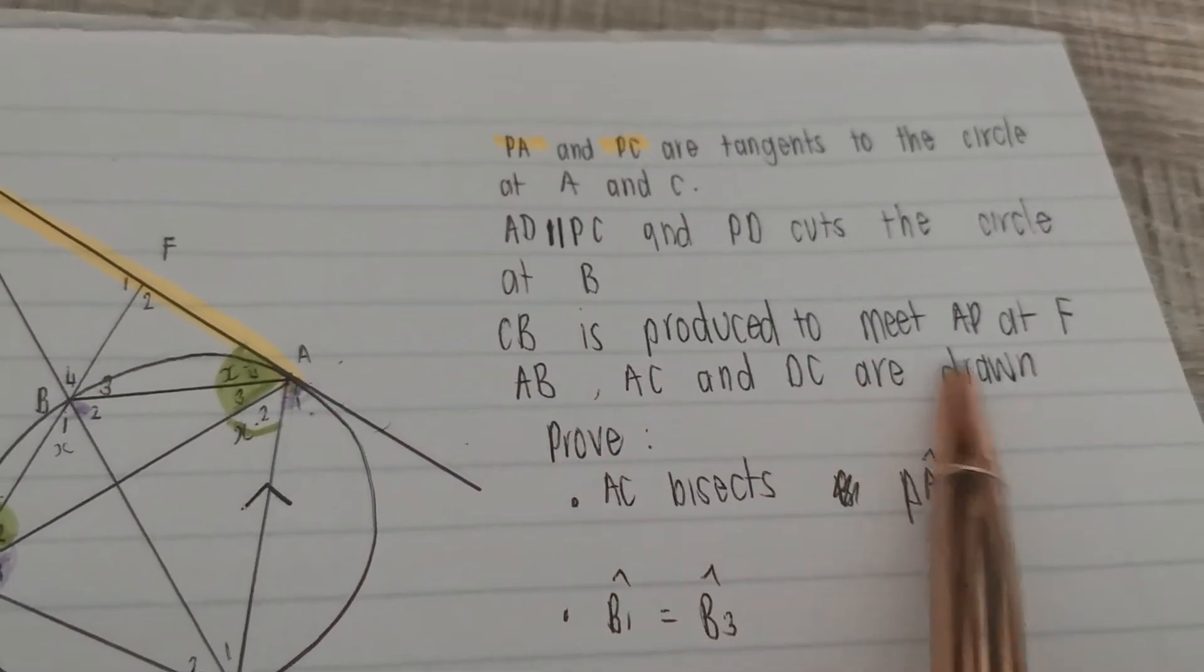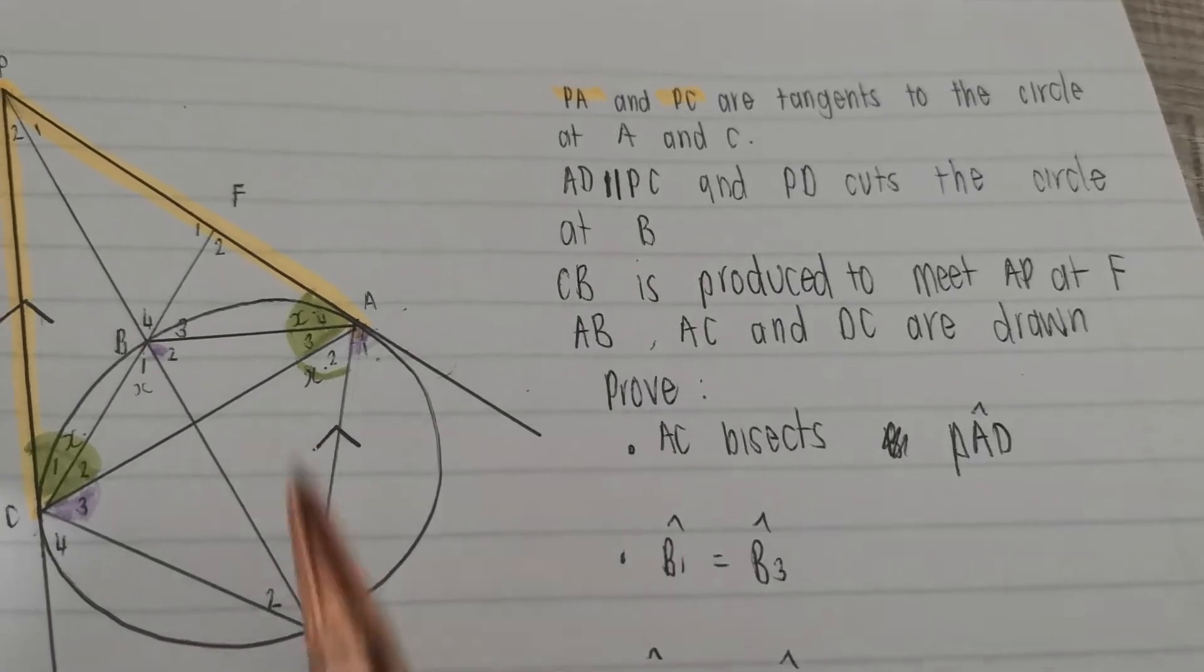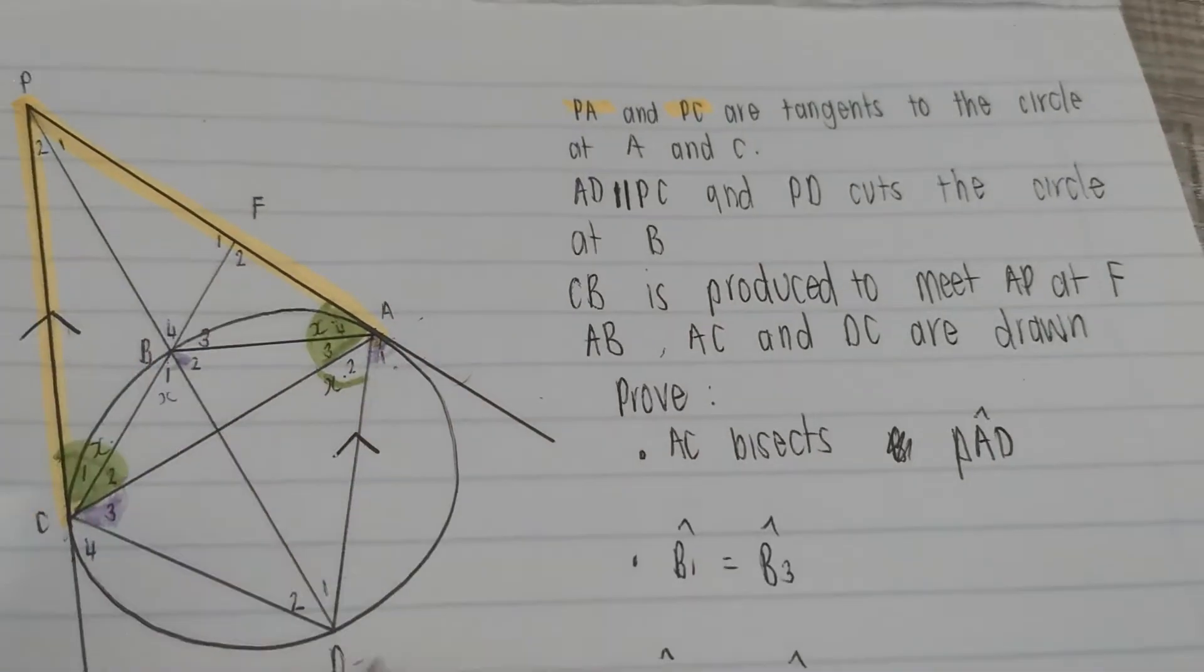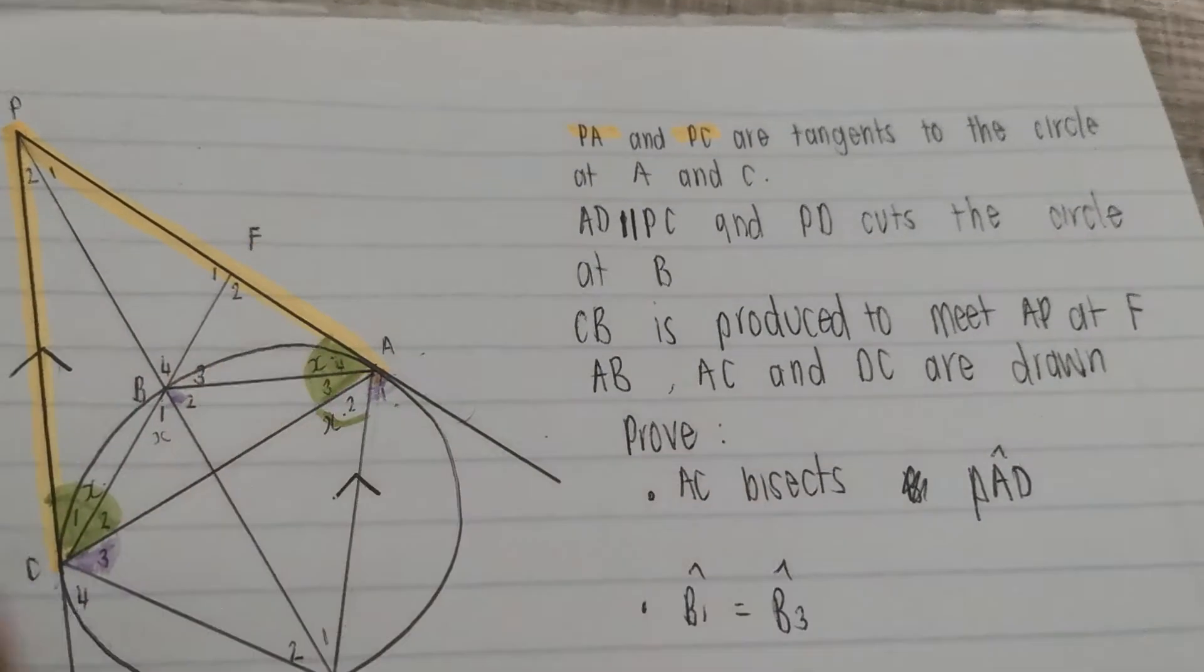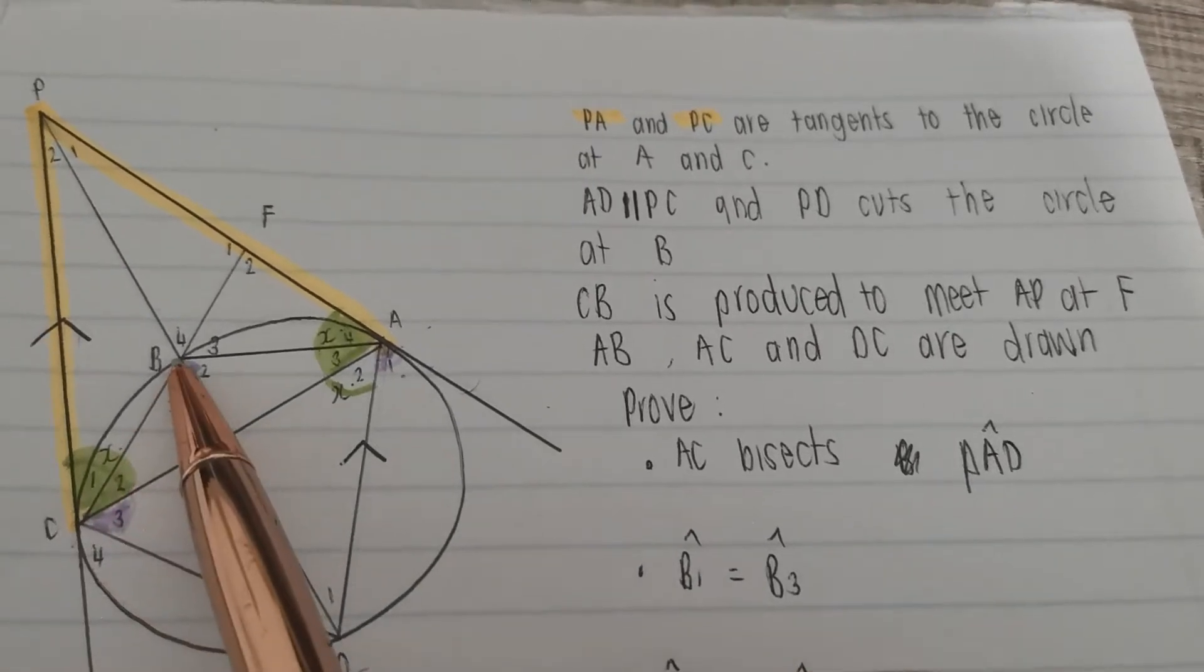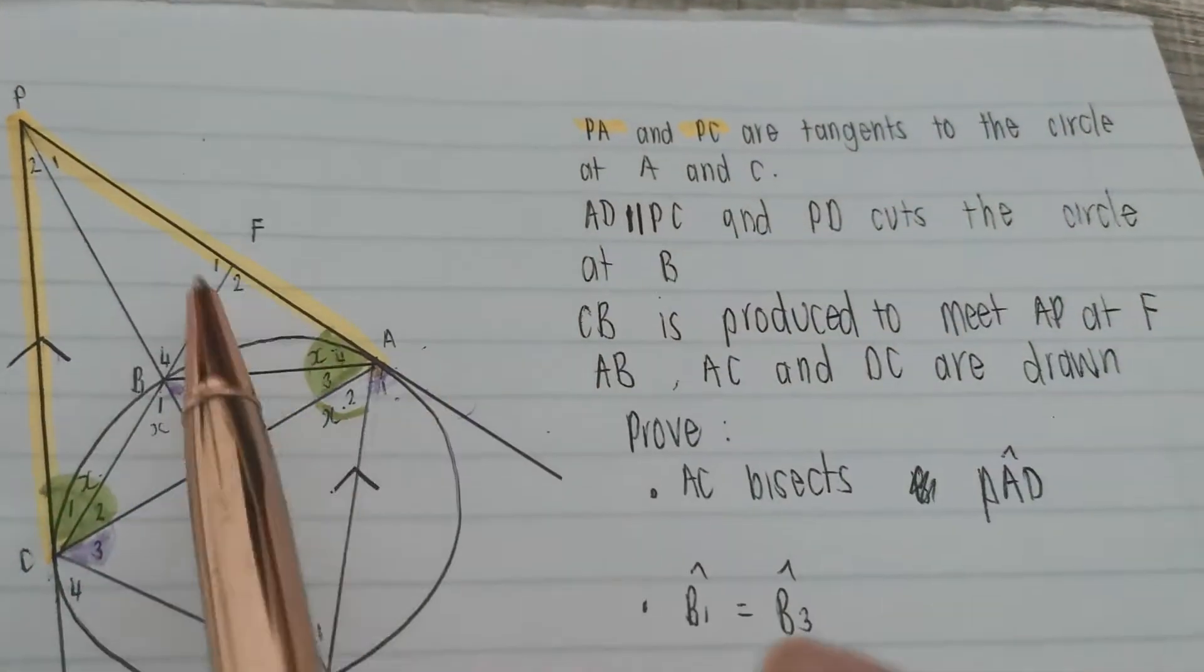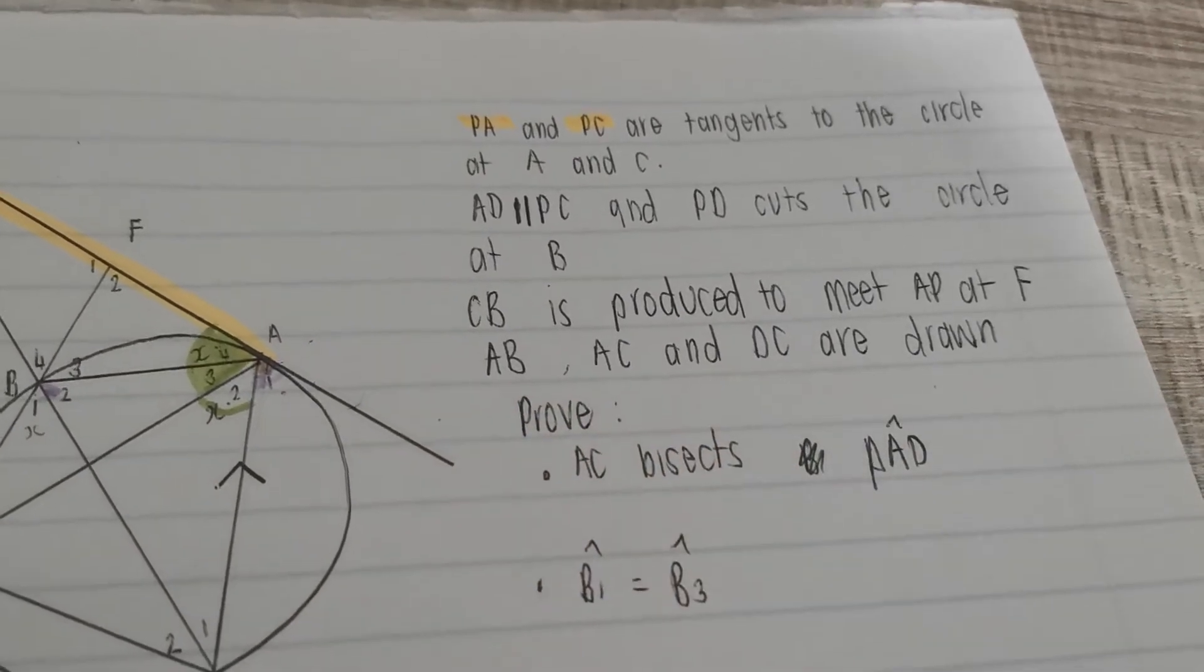It says CB is produced to meet AP, CD produced to meet AP at F. There it is over there. Let me say that again, CB produced to meet AP at F, there it is. And then it says AB, AC and DC are drawn.